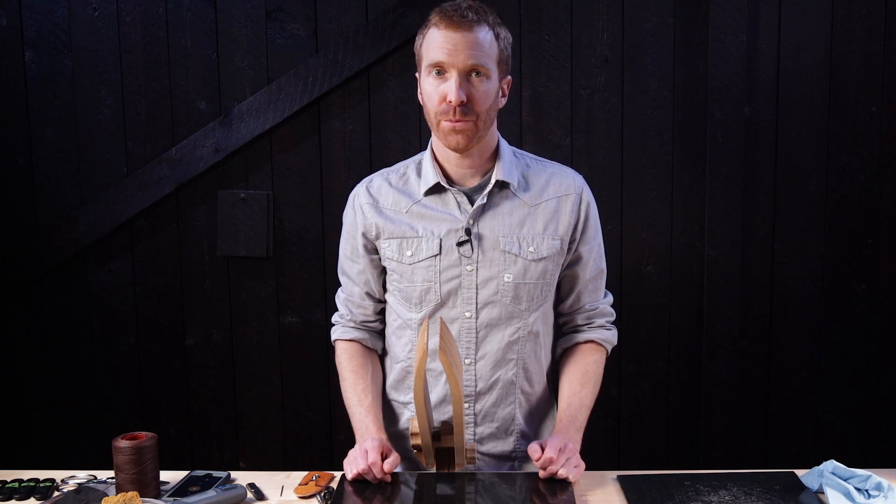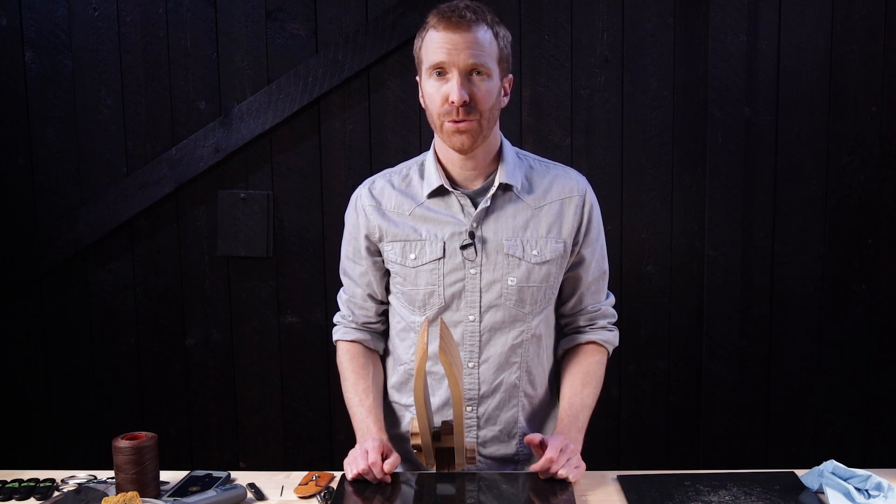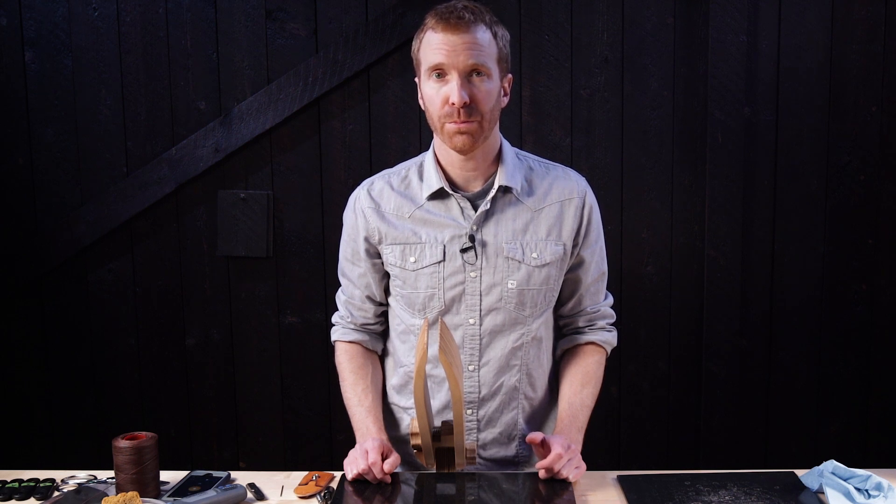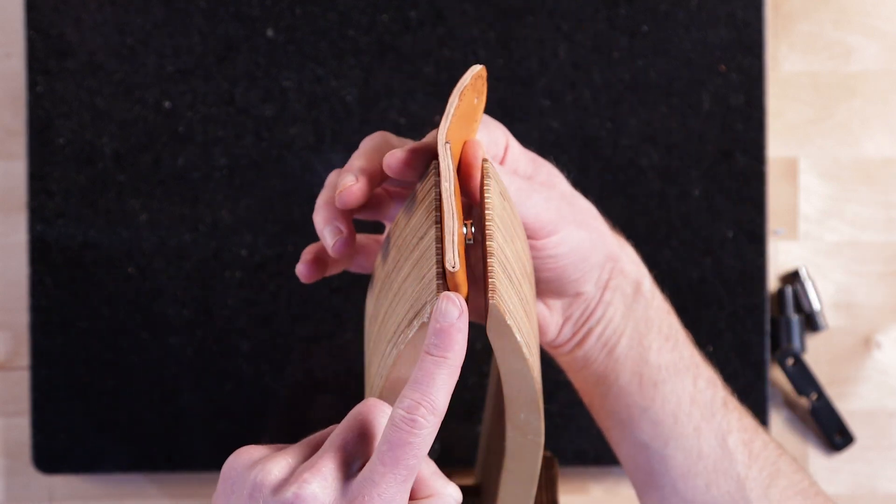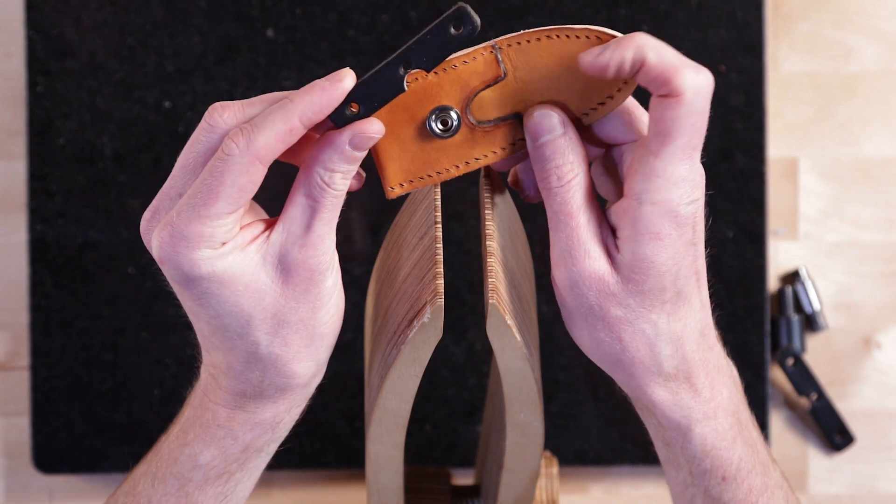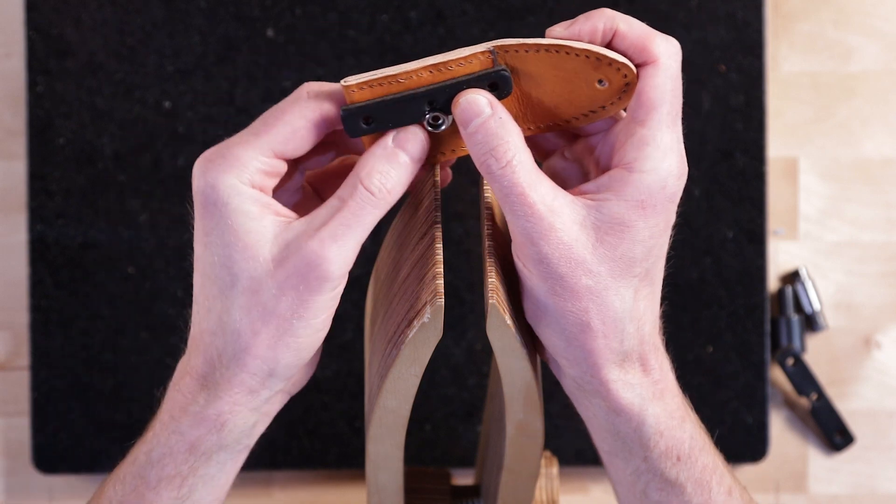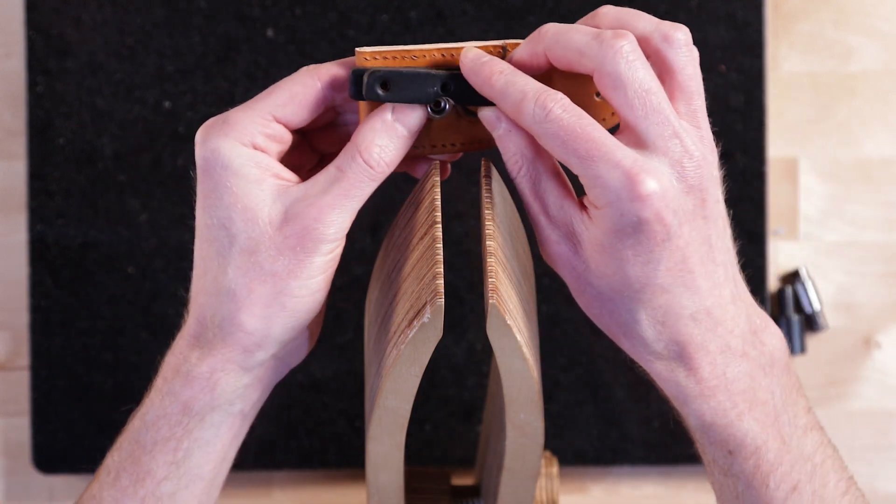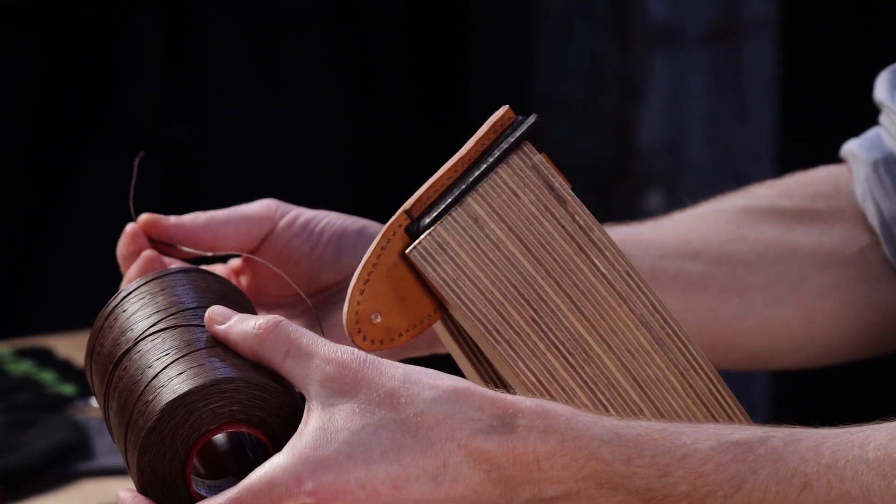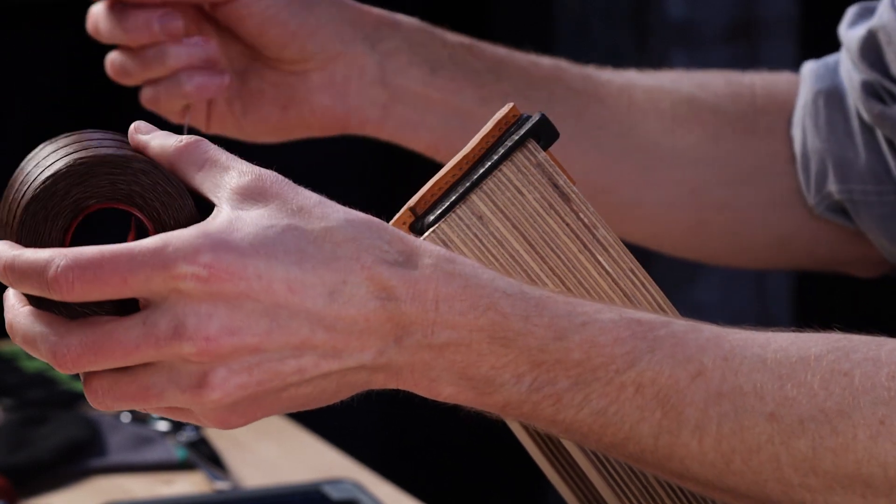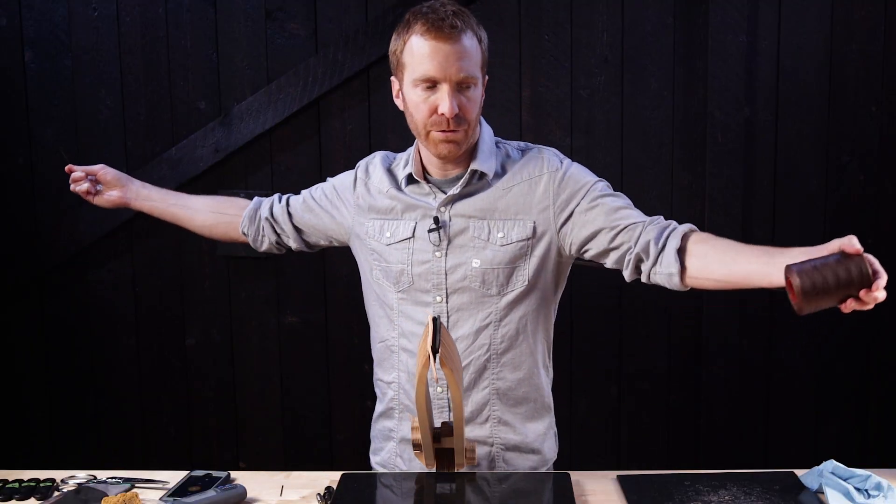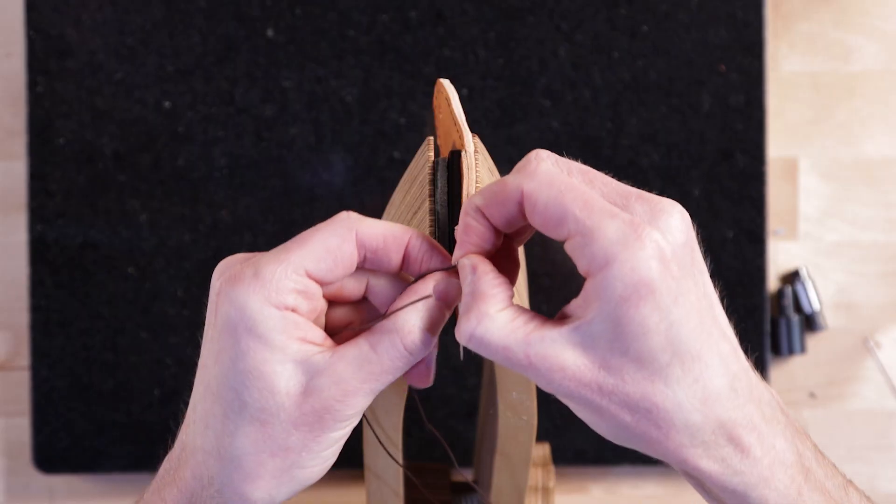I'm going to hand stitch this with Ritza 1.2 millimeter tiger thread and a number two John James harness needle. For detailed info on how to saddle stitch, I have a free tutorial on my tutorials page. So you'll notice that the hardware is going to get in the way when you try to clamp this down. So I've actually taken this little scrap piece of leather that I punched a hole in on the edge so it can fit over that. And in my case, I actually need two of those to make it work. So even though this is a really small piece, it actually takes quite a bit of thread. You're going to want to cut at least a full two arms length if you have your arms stretched out and even then I'd add on an extra foot on top of that. Okay, go ahead and thread your needle.